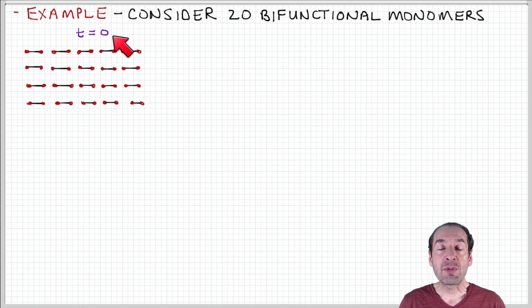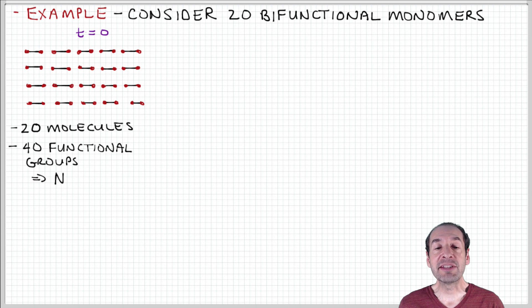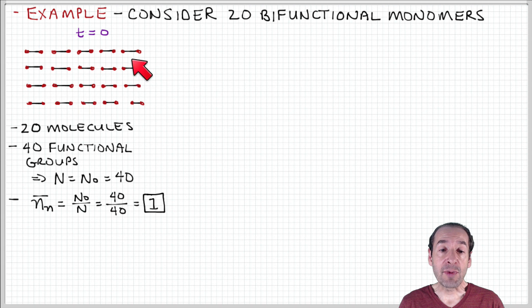You can imagine that when we start at time zero, we're going to have a population of molecules that are only monomers because no reaction has taken place yet. If we count what we have in our array here, we have 20 molecules. They're all monomers because I got a 5 by 4 matrix. Each of those molecules has two functional groups. So I have 40 functional groups. In this case, my tally of the functional groups present, n, is equal to n naught, which is the initial number because we're at the initial time. This is 40.